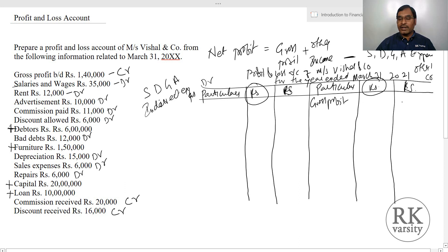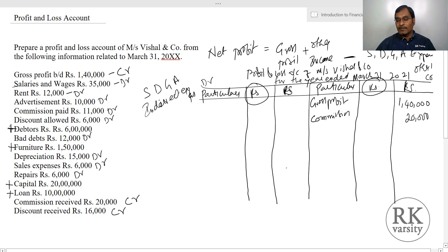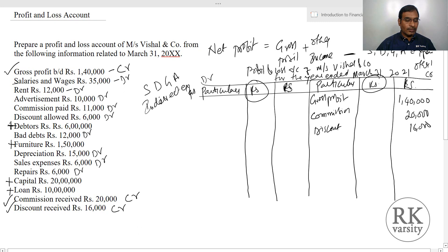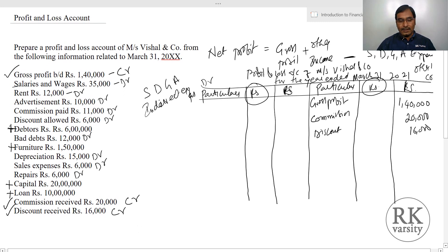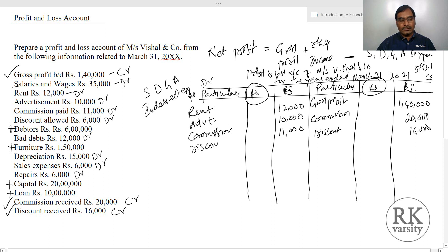Gross profit is 1 lakh 40,000 rupees. Commission received is 20,000. Discount received is 16,000. All three credit side transactions have been recorded. On the expenses side: rent is 12,000, advertisement is 10,000, commission paid is 11,000, discount allowed is 6,000, bad debts is 12,000.